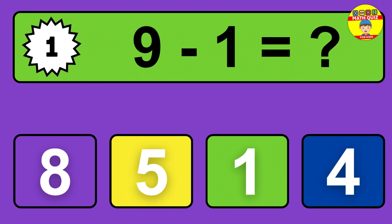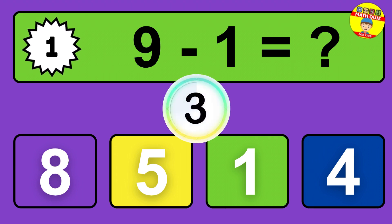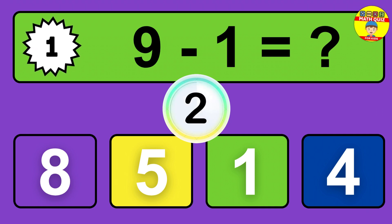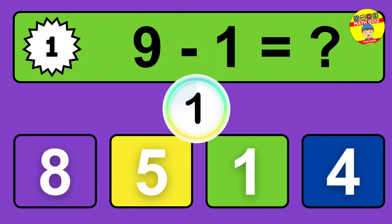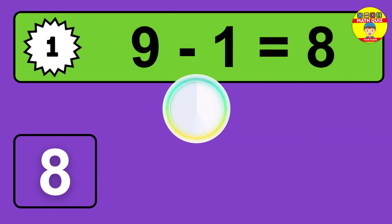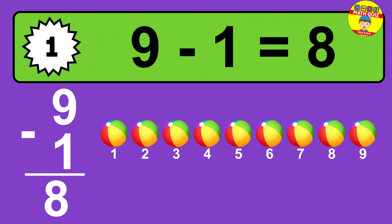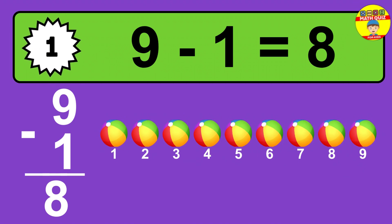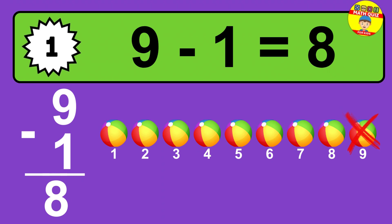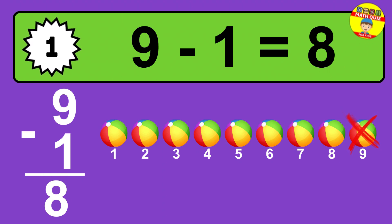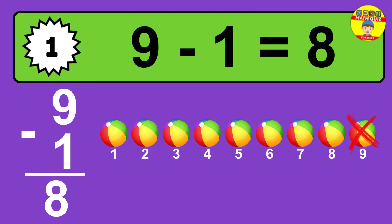Question one: nine minus one equals what? The answer is nine minus one is eight. Let's count it: one, two, three, four, five, six, seven, eight.